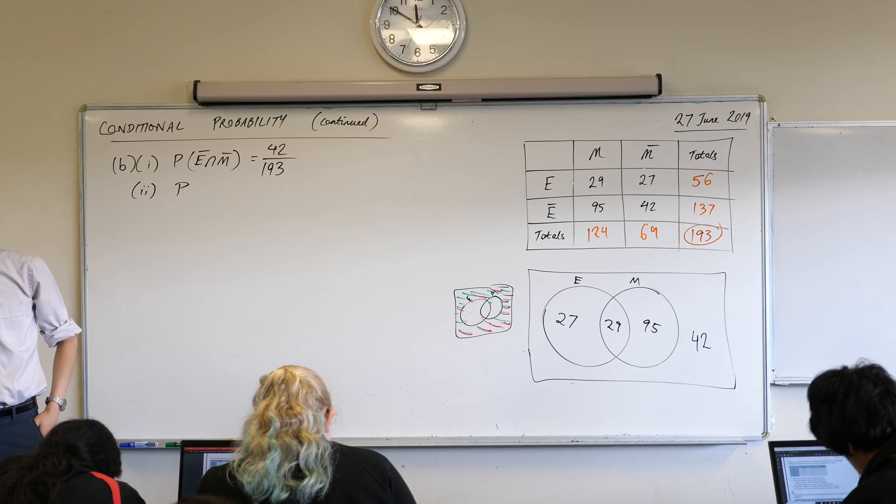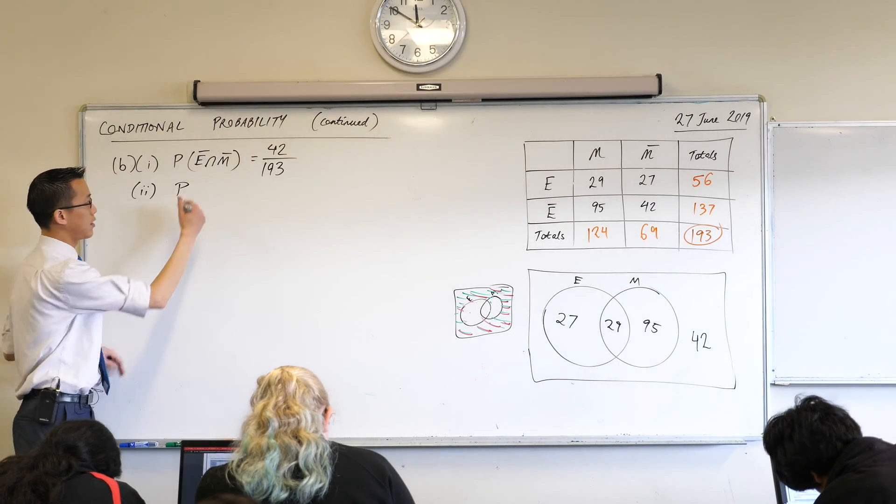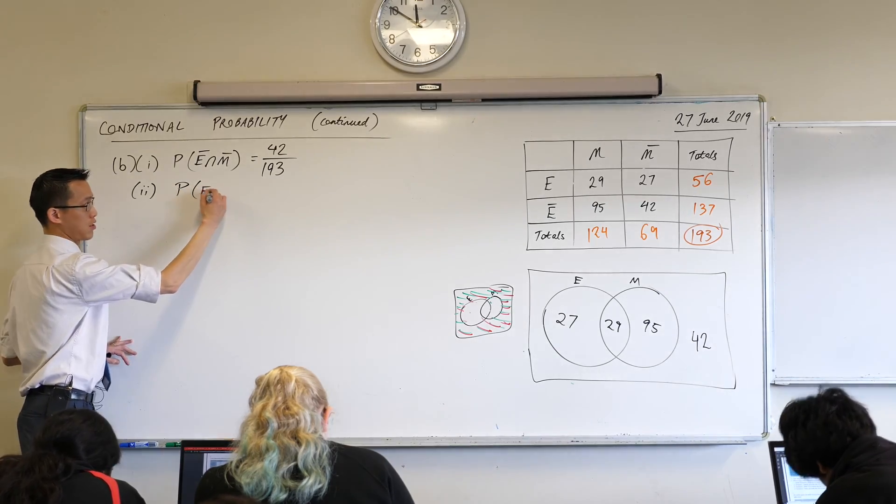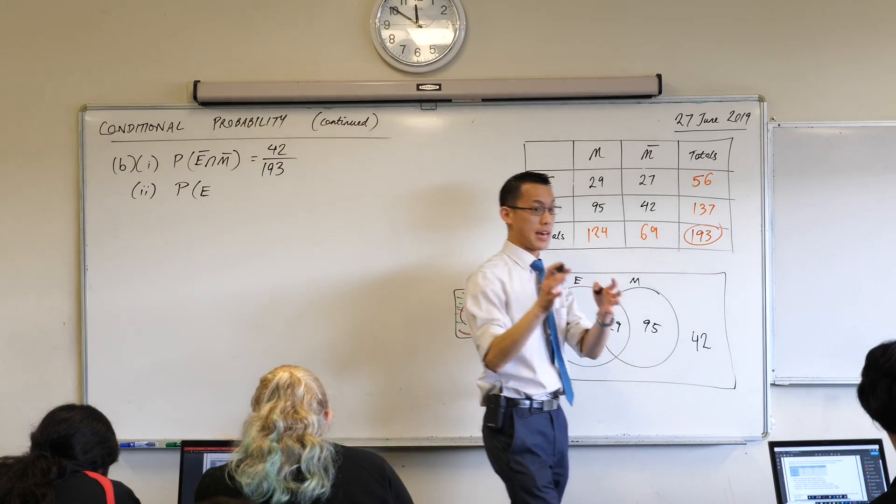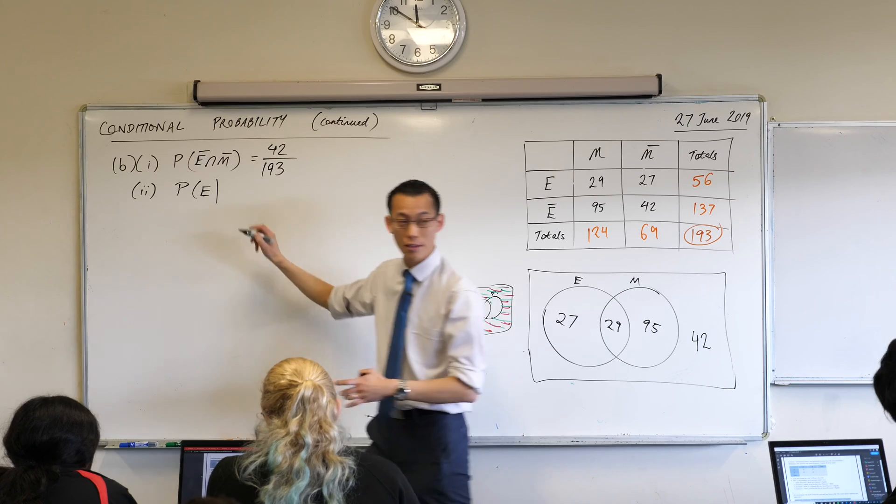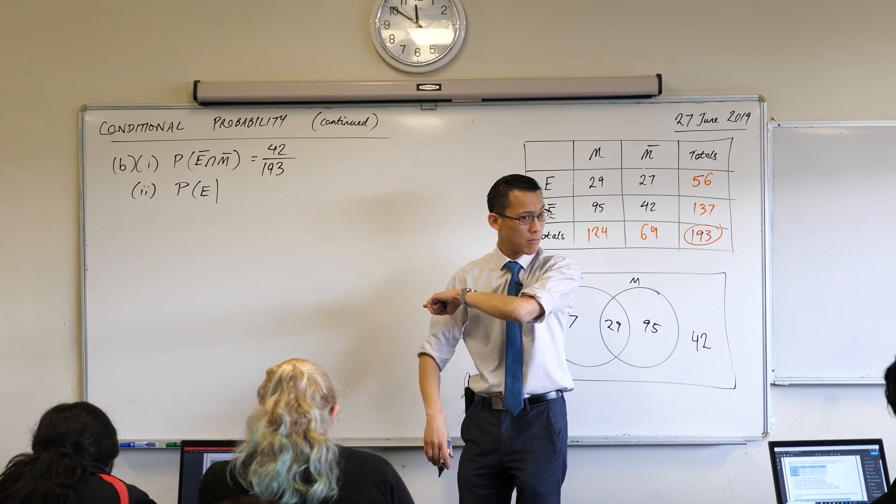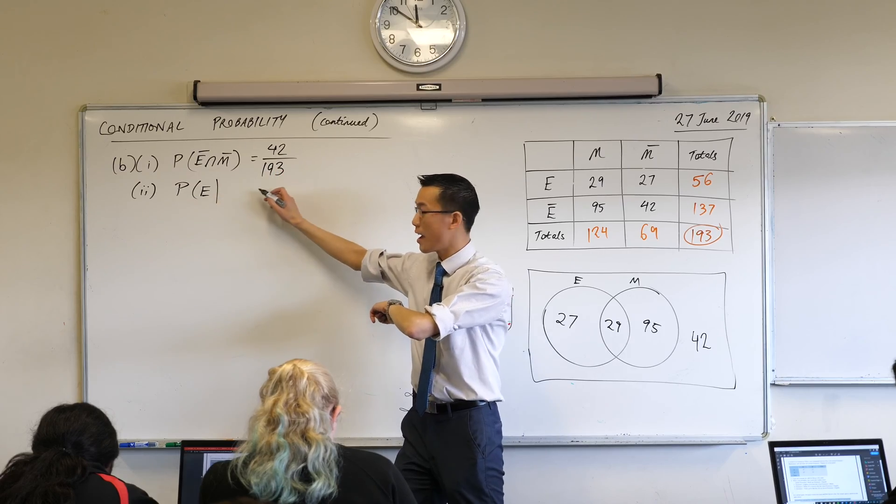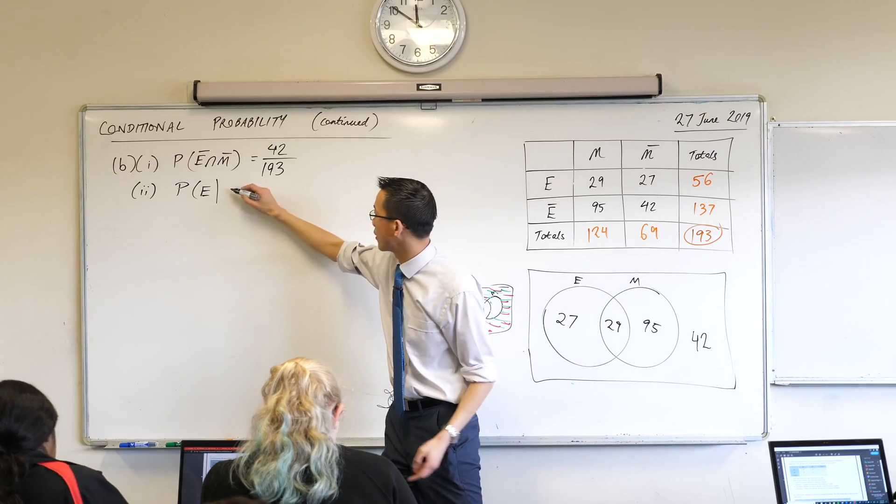So now let's think about this probability. Extension 1 English, given that they chose extension 1 maths. So the thing that I'm interested in is extension 1 English, that's how I'm indicating at the moment. What was the symbol we introduced this morning to say, given that? Do you remember what it was? Yeah, it's just the pipe, right? That one vertical line, right? Like so, okay? And what's the condition that I know? Given that, look at the question, it's there. They chose extension 1 maths, right? Very good.